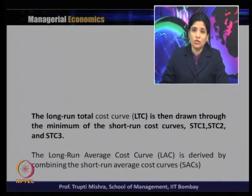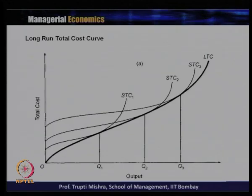Similarly, the long run average cost curve is derived by combining short run average cost curves. For a specific output level — say 100 units, 200 units, or 500 units — keeping fixed input constant and changing only variable input gives one short run cost curve. Taking a series of short run cost curves at different output levels gives us the long run total cost curve.